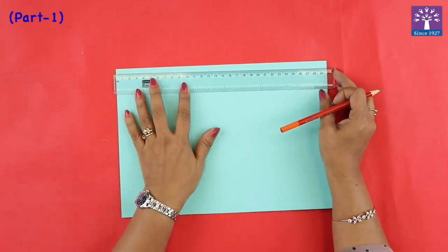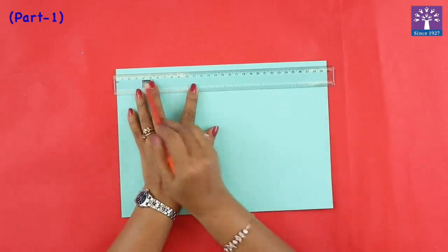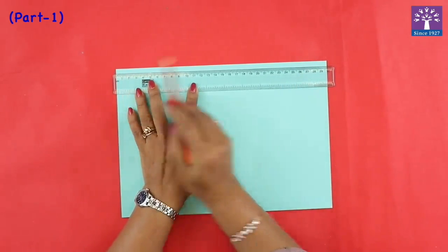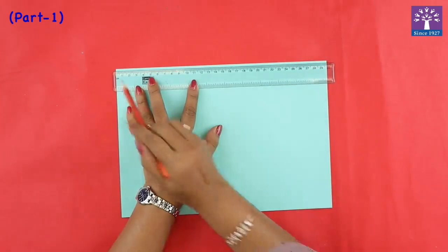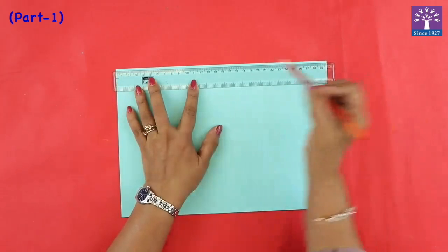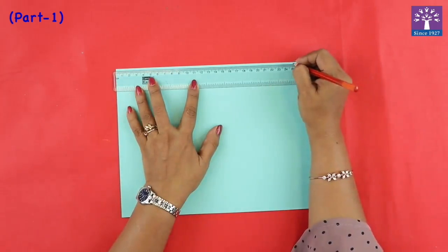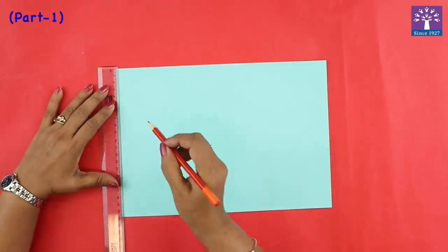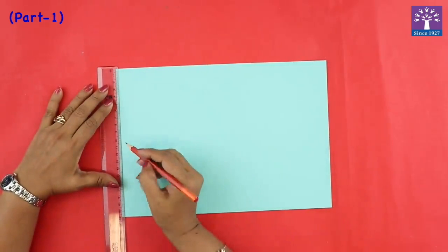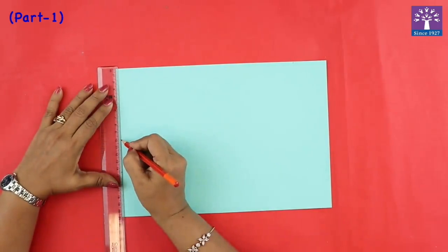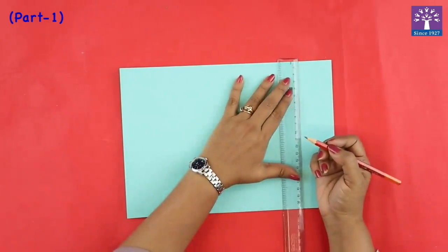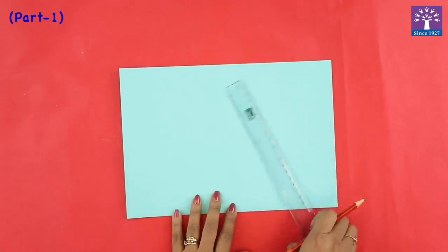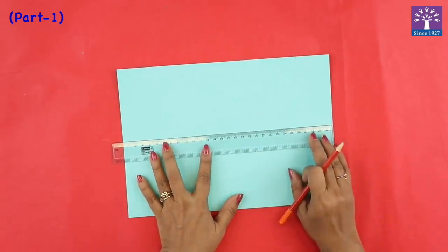First you will mark 25 centimeters. You can see on the scale 25 centimeters. Start from this corner of the paper, mark 25 centimeters and 10 centimeters in the breadth. So basically we are drawing a rectangle which is 10 centimeter by 25 centimeter.